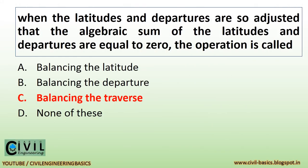When the latitudes and departures are so adjusted that the algebraic sum of the latitudes and departures are equal to zero, the operation is called balancing the traverse.